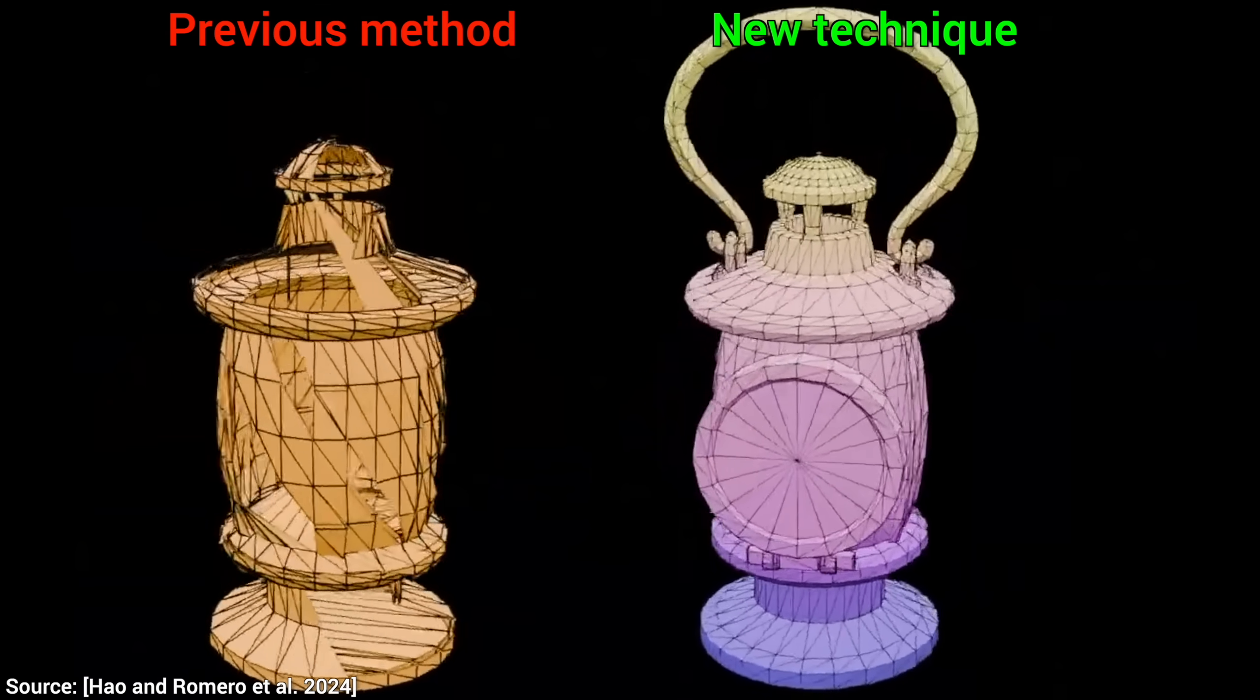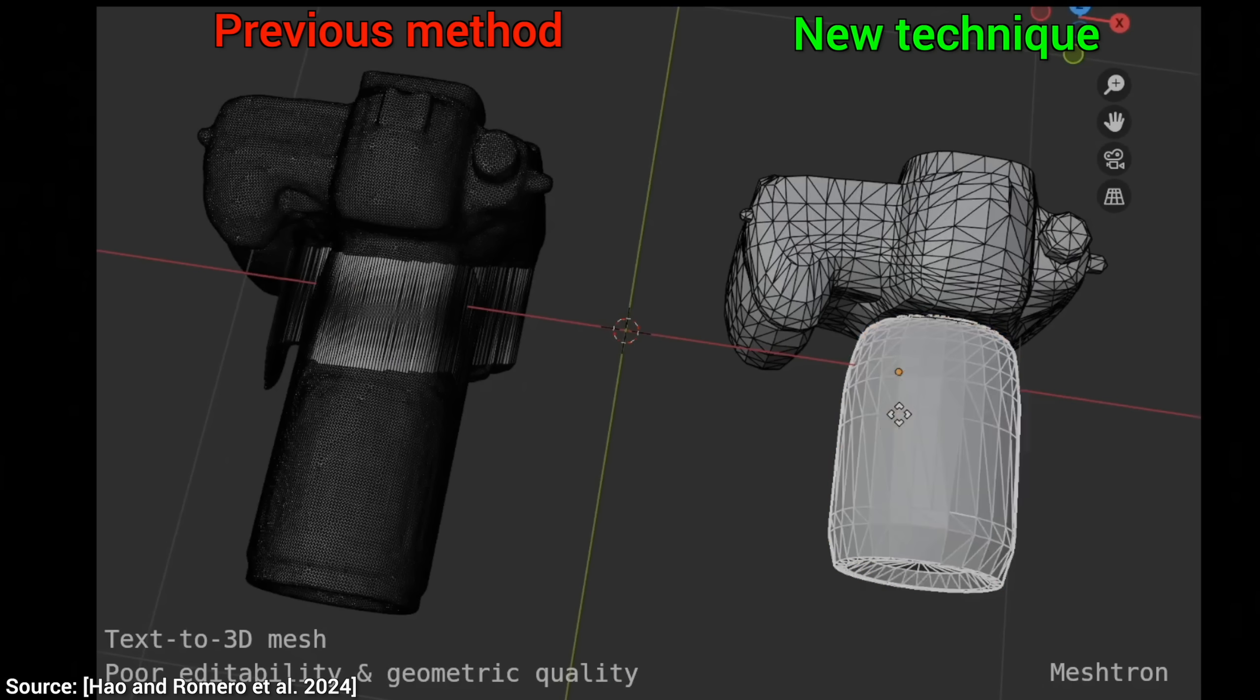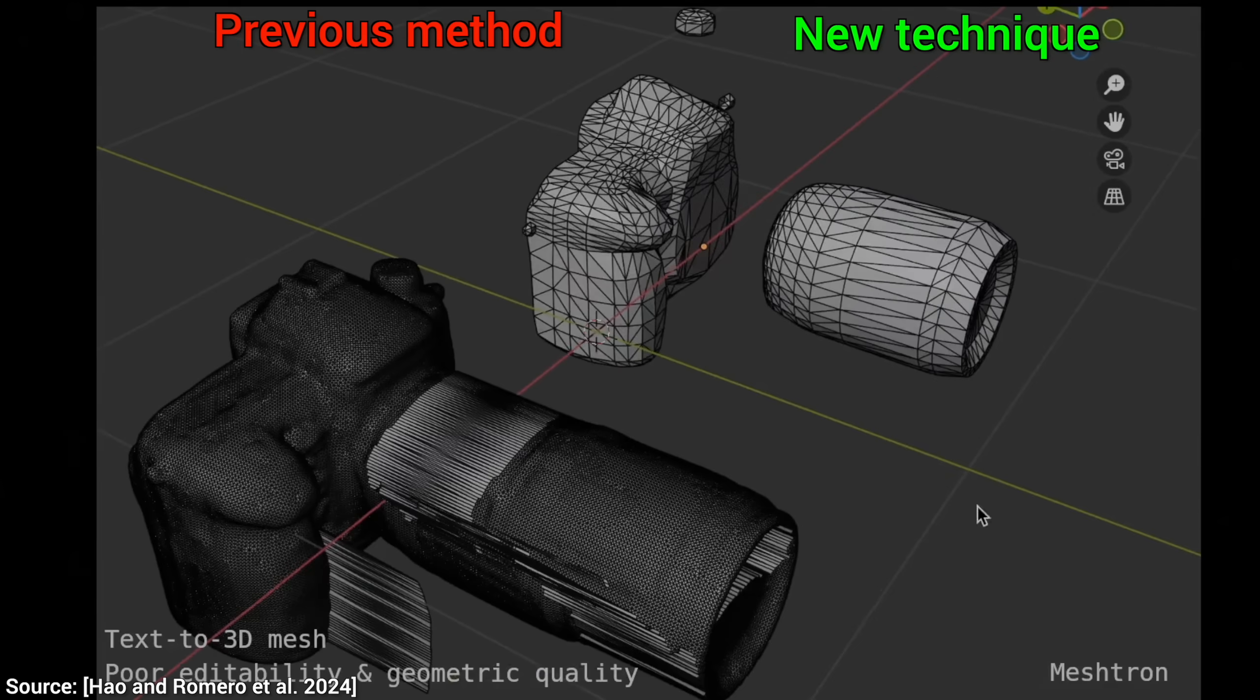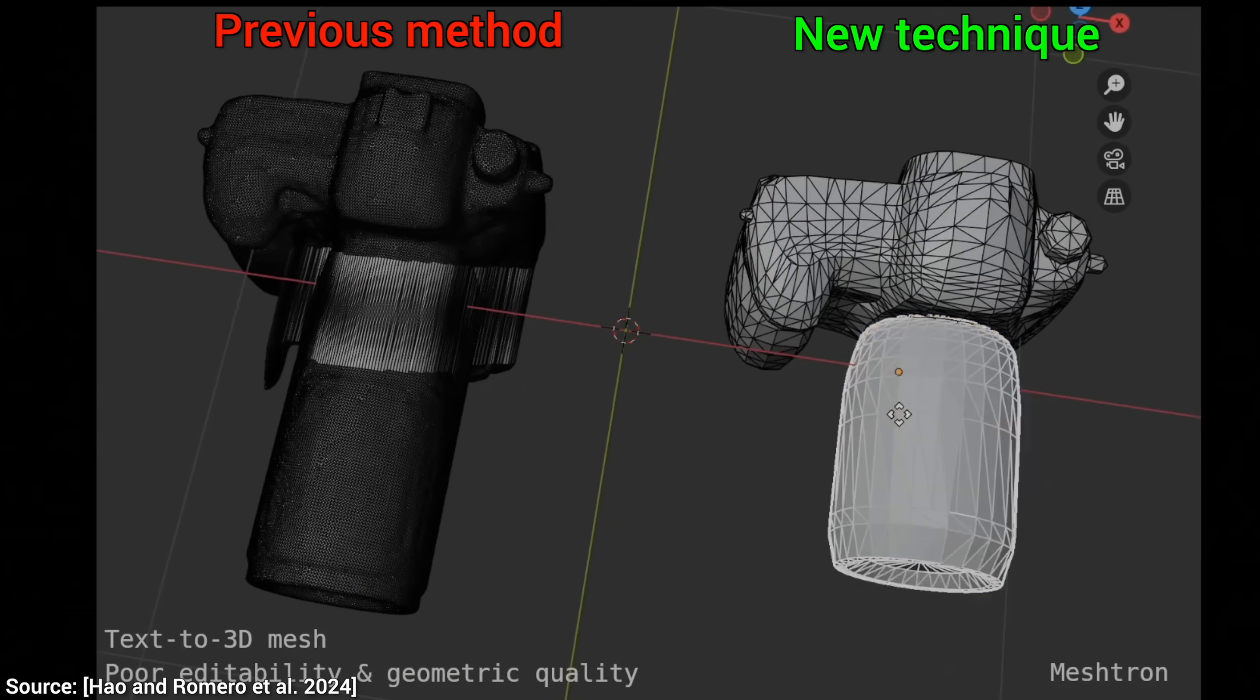Oh, that is so much better tessellation. This camera can be taken apart and edited easily, and it requires fewer elements, a sparser mesh to do that.